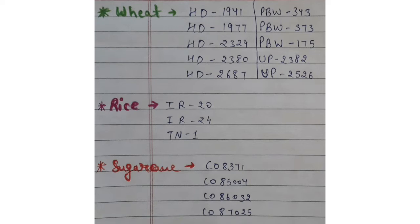For rice, you can remember IR 20 — Indian Rice 20, and International Rice 24, IR 24. These are high-yielding rice varieties.